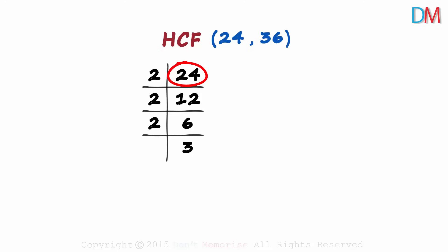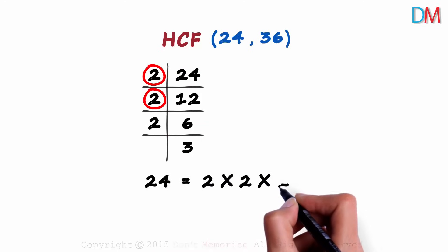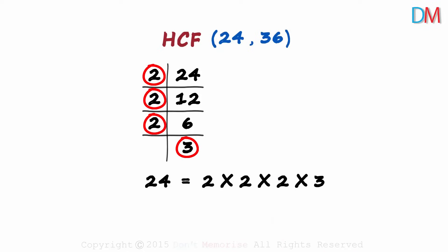How can we write 24 now? Remember the L shape? 24 can be written as 2 multiplied by 2 multiplied by 2 multiplied by 3. We reduce 24 to its prime factors.